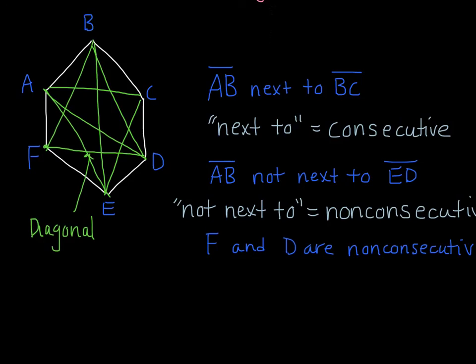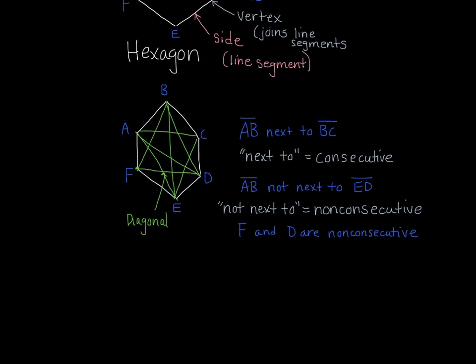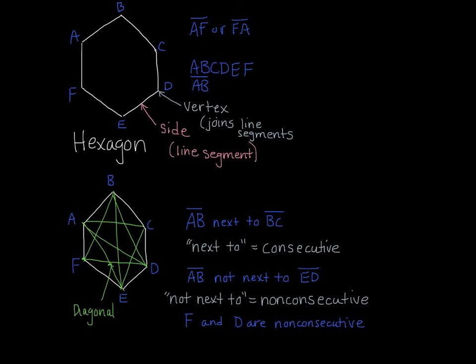And this is an important idea as we move into quadrilaterals to recognize the difference between consecutive sides, AB and BC, and non-consecutive sides, AB and ED, or consecutive vertices, maybe A and B or A and F, and non-consecutive, A and D, A and C, A and E. So that's the general idea here, that we want to be able to classify sides and vertices as consecutive or non-consecutive, and we want to know that a vertex of a polygon is where two line segments come together, and that the sides of a polygon are made up by line segments.